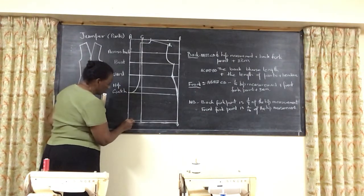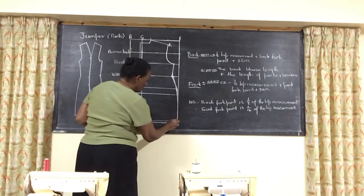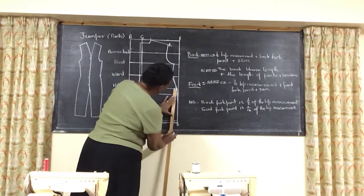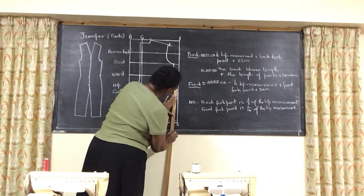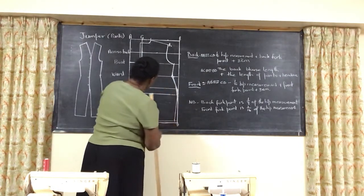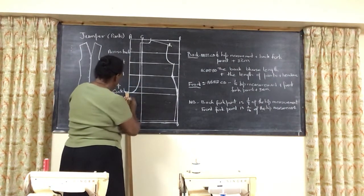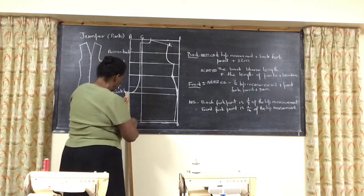Now to get the leg, we are going to go in on both sides. Three centimeters and three centimeters. And you shape it from the hip line in. So you come in from the hip line in and from the fork point in.